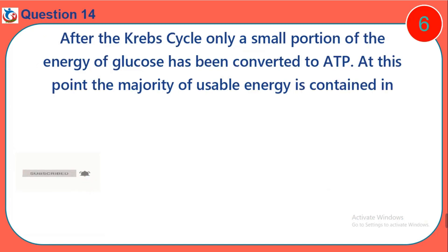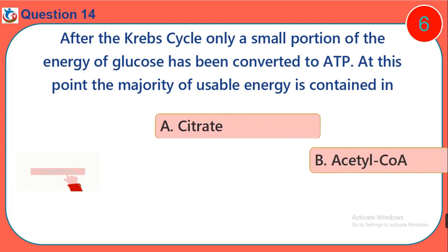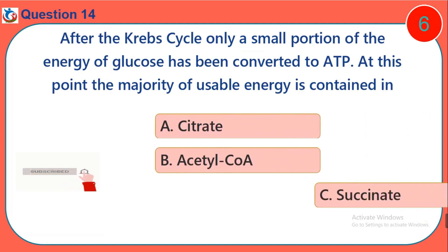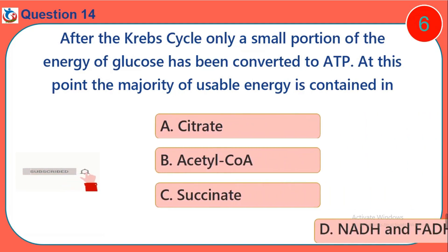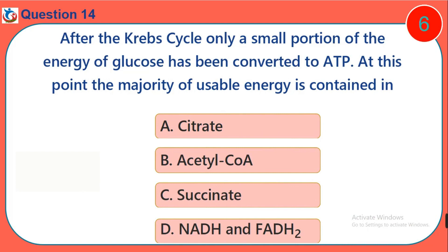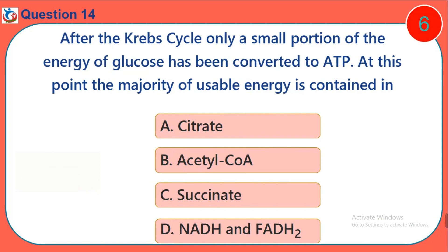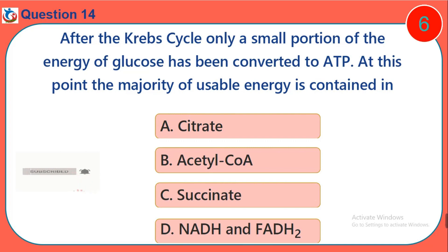Question 14. After the Krebs cycle, only a small portion of the energy of glucose has been converted to ATP. At this point, the majority of usable energy is contained in: A. Citrate. B. Acetyl-CoA. C. Succinate. D. NADH and FADH2.